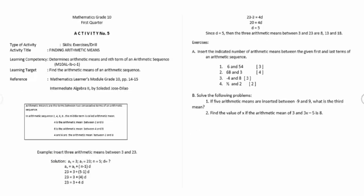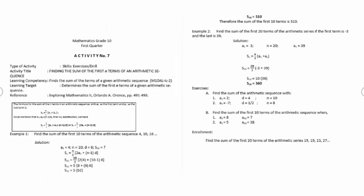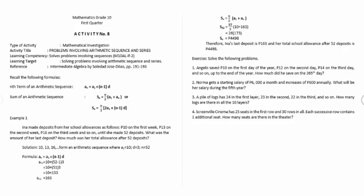Activity number 5: finding arithmetic means. Activity number 6: determining the rule of an arithmetic sequence. Activity number 7: finding the sum of the first 10 terms of an arithmetic sequence. Activity number 8: problem solving involving arithmetic sequence and arithmetic series.